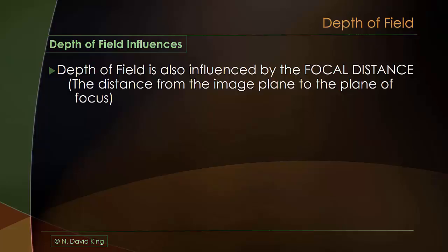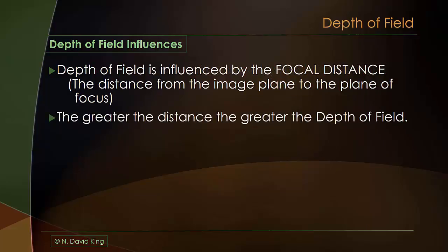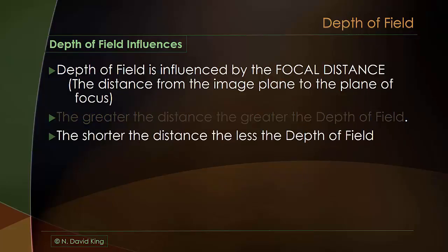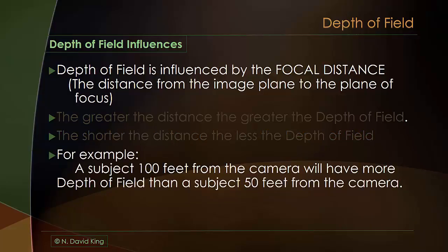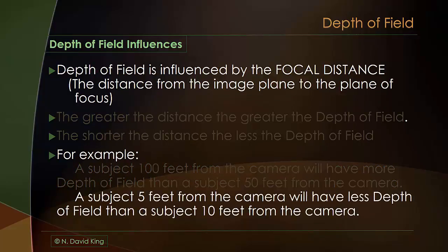Depth of field is also influenced by the focal distance — the distance from the image plane to the plane of focus, or sometimes just the camera-to-subject distance. The greater the distance, the greater the depth of field; the shorter the distance, the less the depth of field. That's simply because the greater the distance, the smaller things are in the camera. A subject that's 100 feet from the camera will have more depth of field than a subject that's 50 feet from the camera, all other things being equal. A subject that's 5 feet from the camera will have less depth of field than a subject 10 feet from the camera, because it's bigger — there's more magnification.